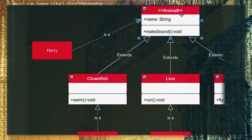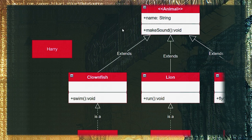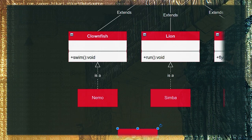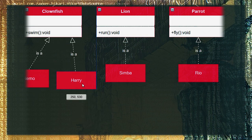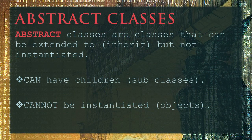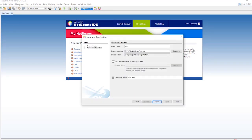To do that, we make the Animal class abstract. In the class diagram, we notate that a class is abstract by enclosing the class name inside chevrons. Now we are not going to be able to instantiate the Animal class, so Harry can become an instance of Clownfish, Lion, or Parrot. Abstract classes are classes that can be extended or inherited from but not instantiated — they can have children or subclasses but cannot have objects.